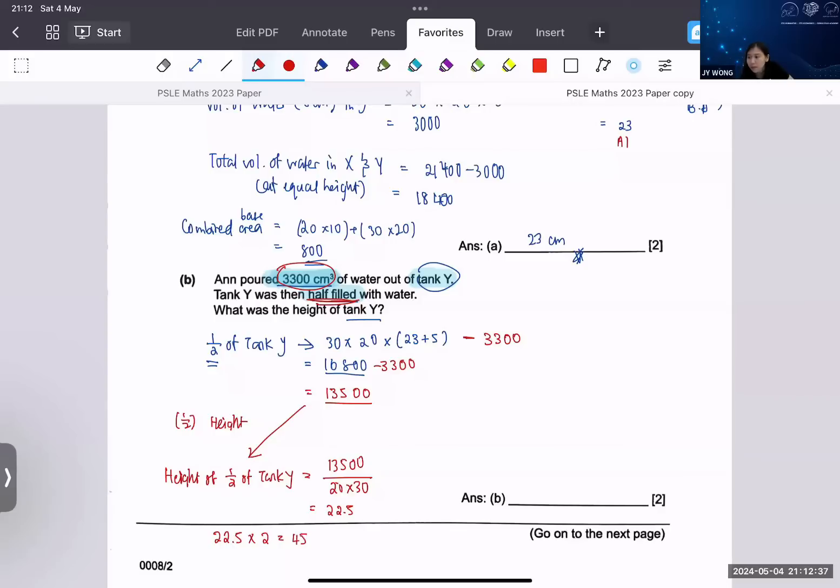Another way is to find the volume of tank Y first. Tank Y would be 13,500 times 2, that will give you 27,000. Then to find the height again, the formula doesn't change - volume divided by the base area, and that will give me 45.